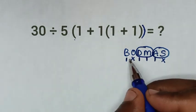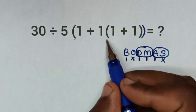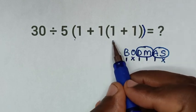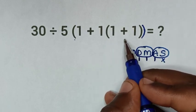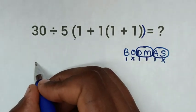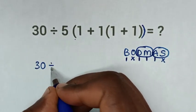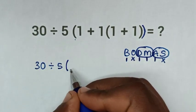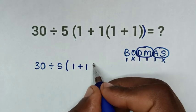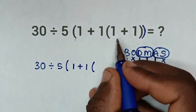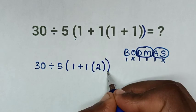So in the first step, we'll deal with this inner bracket. The operation inside this inner bracket is 1 plus 1 which is 2. So it will be 30 divided by 5, bracket 1 plus 1, then bracket 2 bracket.